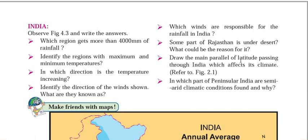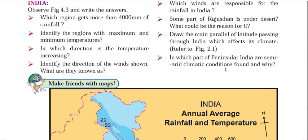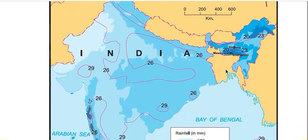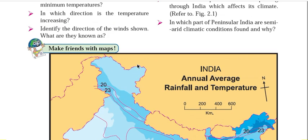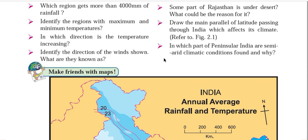Draw the main parallel latitude passing through India that affects its climate. This is the Tropic of Cancer — 23 degrees 30 minutes north latitude. It passes through Gujarat and central states of India. There are eight states from which the Tropic of Cancer passes — including Gujarat, Madhya Pradesh, and others in central India.